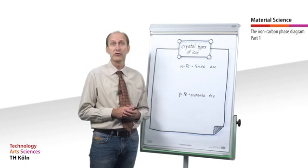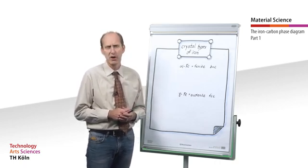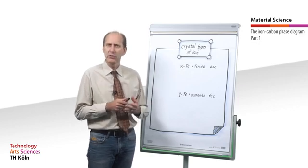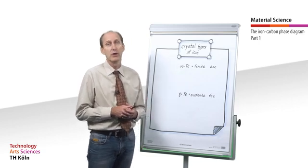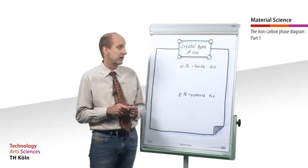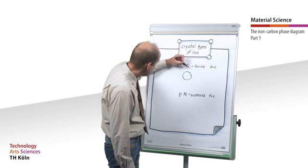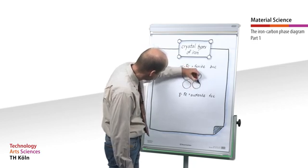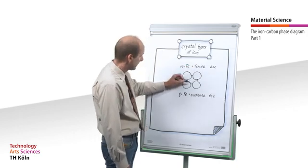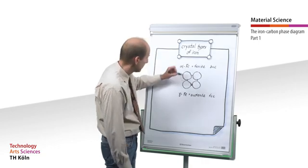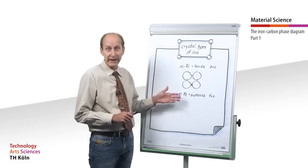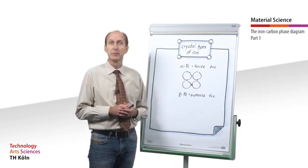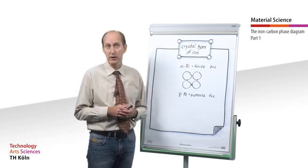Austenite is non-magnetic and dissolves considerably more carbon in solid solution. It is characterized by excellent ductility and a slightly higher thermal expansion. Although the body-centered cubic alpha iron features a lower packing density, the existing lattice vacancies are only very small and allow only atoms with a diameter of 15% of iron to be absorbed without stress. The more densely packed face-centered cubic gamma iron, on the other hand, has fewer but larger vacancies, which could absorb atoms with a diameter of up to 41% of iron without stress.